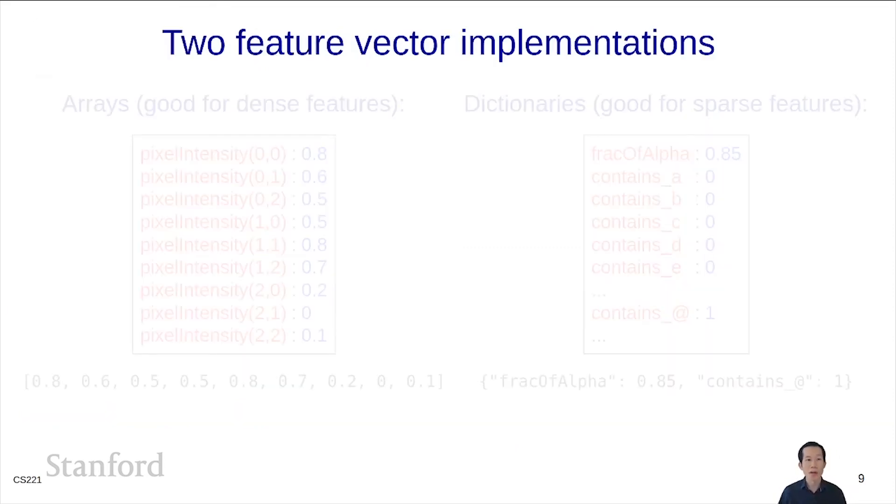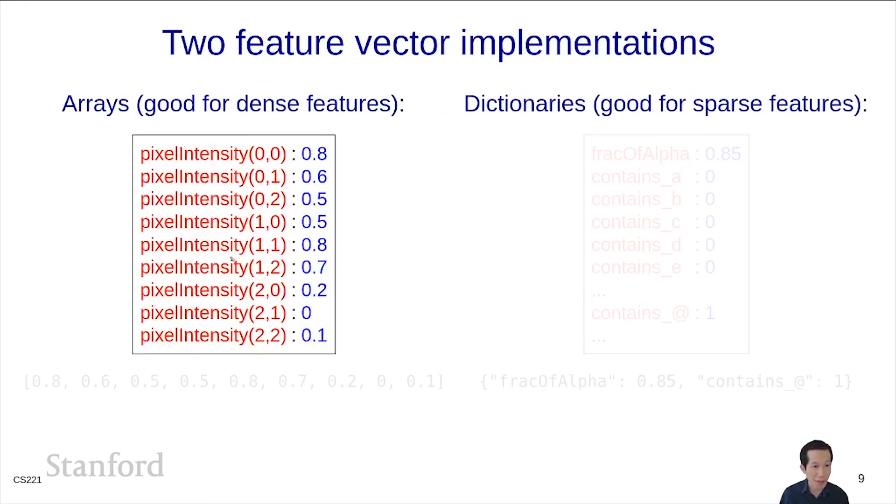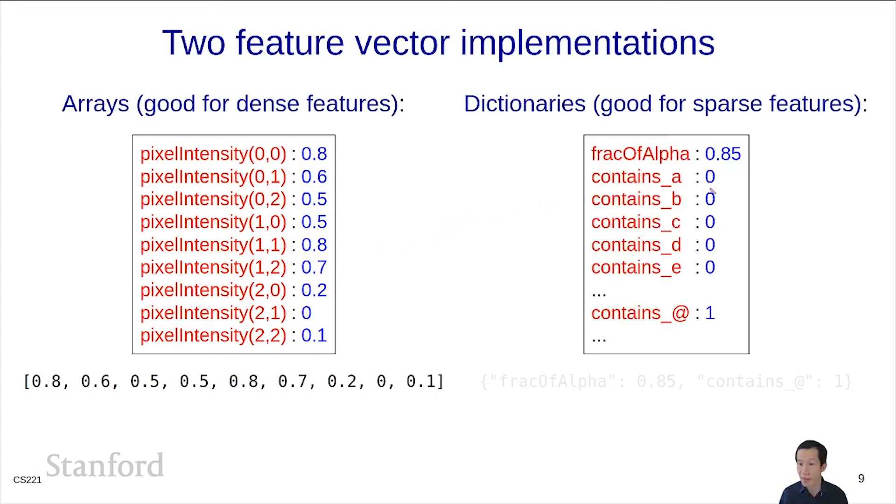In general, there's two ways you can represent feature vectors. One is using arrays and one is using dictionaries. If your feature vector looks like this, which is dense or not sparse, that means all the feature values are mostly non-zero, then you might want to just represent this as an array, order the features somehow and just list out the numbers. But in cases where your feature vector looks like this and has lots of zeros, then it would be more efficient to represent this as a dictionary, where you specify the feature name, colon, the feature value of only the non-zero elements. By convention, anything that is not mentioned has a value of zero.